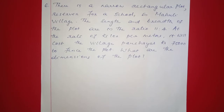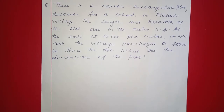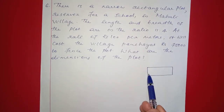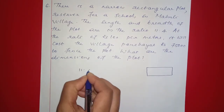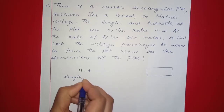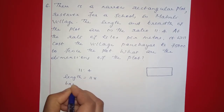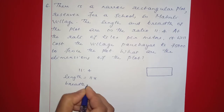Next question: there is a narrow rectangular plot reserved for a school in a Maholi village. The length and breadth of the plot are in the ratio 11 to 4. At the rate of 100 rupees per meter, it will cost the village panchayat 75,000 rupees to fence the plot. What are the dimensions? We let length equal 11x and breadth equal 4x.